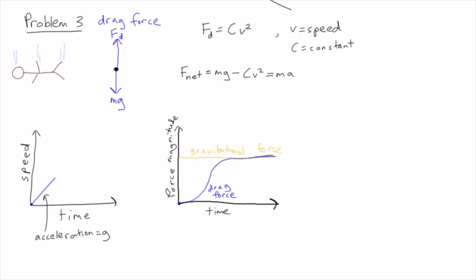This continues until the point where the drag force is equal to the gravitational force and now the sum of forces is zero and so the acceleration is zero and the speed stops increasing. This point is called the terminal velocity.